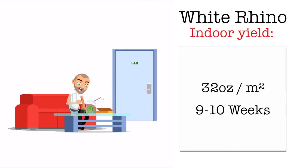Its indoor yield can be up to 32 ounces per square meter with an average flowering time of 9 to 10 weeks.